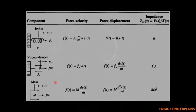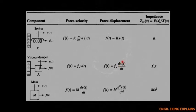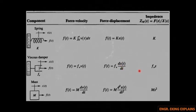Next we have the viscous damper. We have the coefficient of viscosity and the displacement. The force-velocity relationship is f(t) = fv·v(t). The force-displacement relationship is f(t) = fv times the derivative of x(t) with respect to t, which is also velocity, since velocity is the first derivative of displacement. The impedance is fv·s.